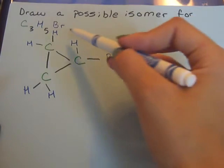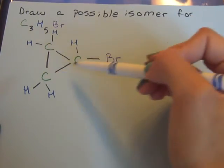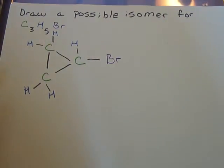So we have five hydrogens, we have the three carbons and then we have the one bromine. So that's one possible isomer for that one.